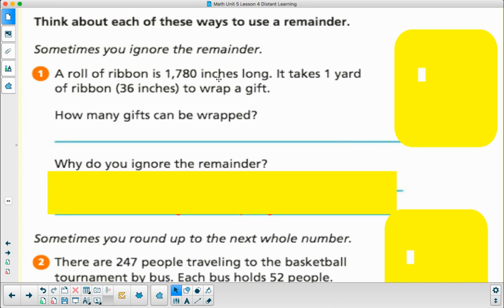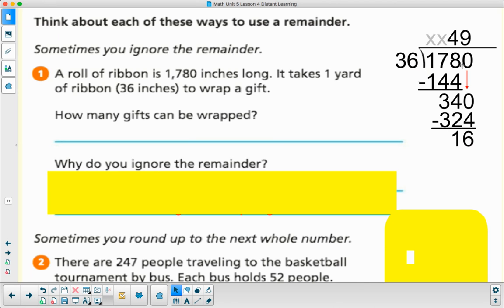Number one: A roll of ribbon is 1,780 inches long. It takes 36 inches to wrap a gift. This is important. We have 1,780 inches of ribbon divided into one yard sections, which are 36 inches. When I did my division, I got 49 with a remainder of 16. So how many gifts got wrapped? I have 49 groups of 36, so I wrapped 49 gifts.